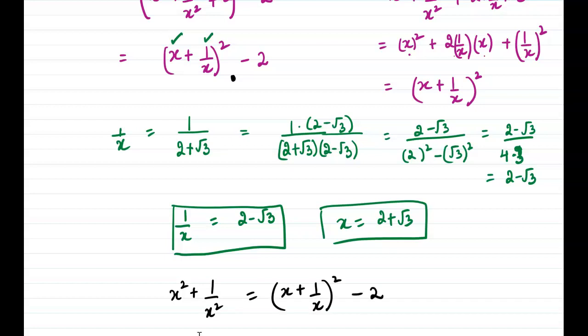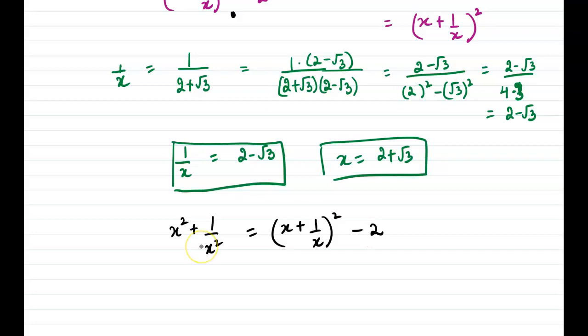So let's substitute the values. x is 2 + √3, and 1/x is 2 - √3, whole square minus 2.